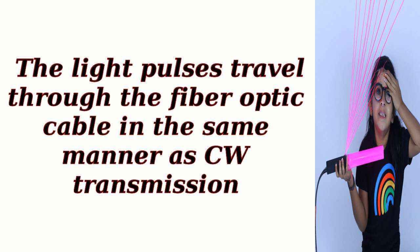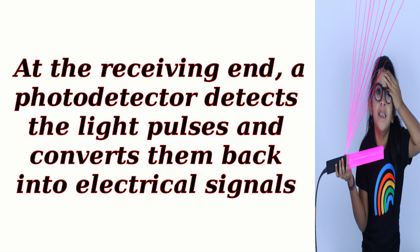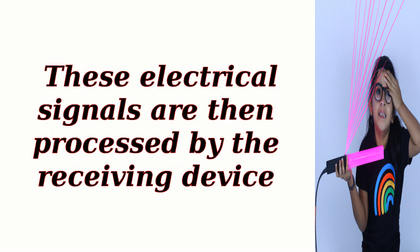The light pulses travel through the fiber optic cable in the same manner as CW transmission. At the receiving end, a photodetector detects the light pulses and converts them back into electrical signals. These electrical signals are then processed by the receiving device.